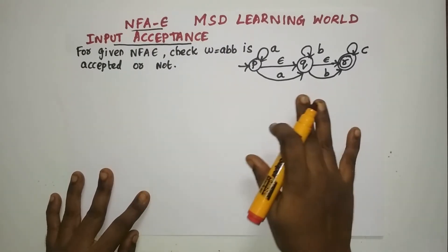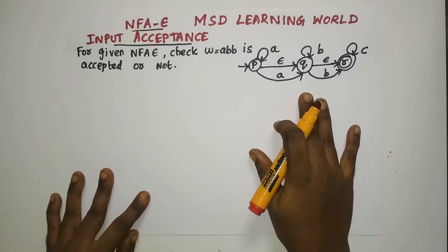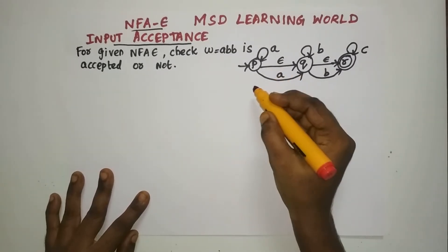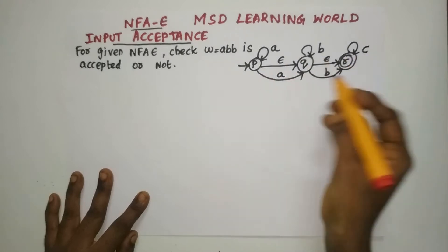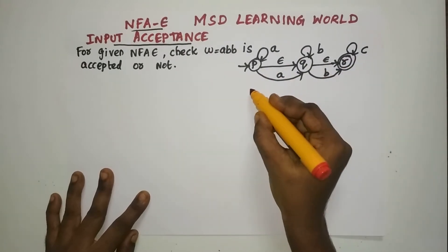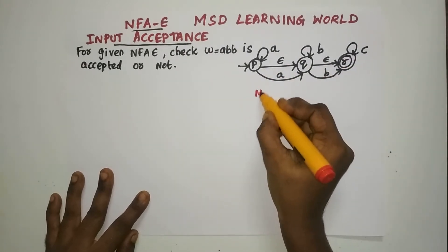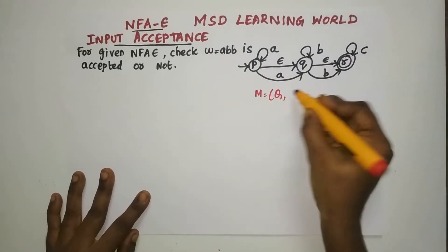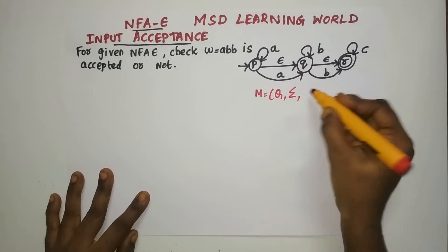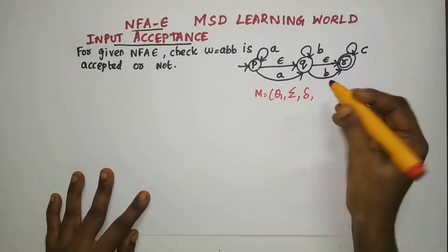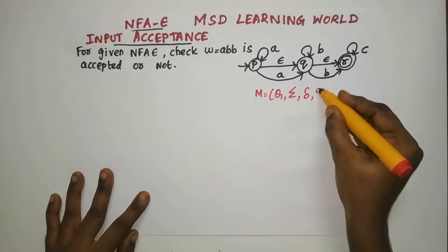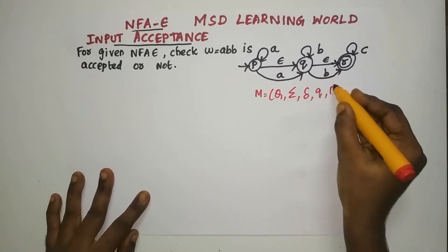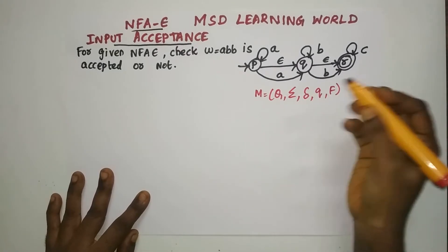Whenever the problem is given, your first step is to identify the machine components of the given automaton. M will be equal to Q, sigma, delta, the initial state, and the final state.